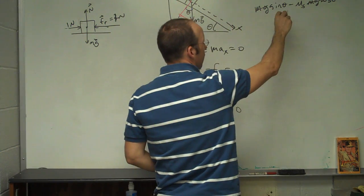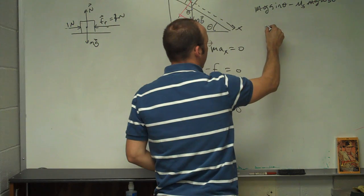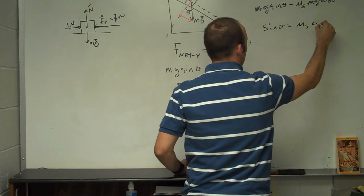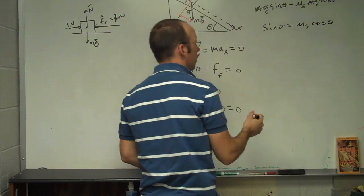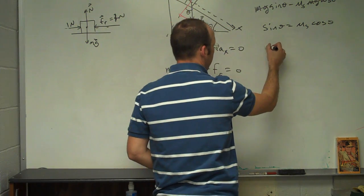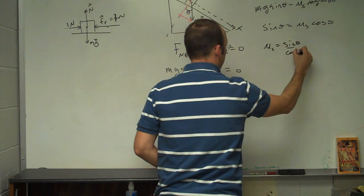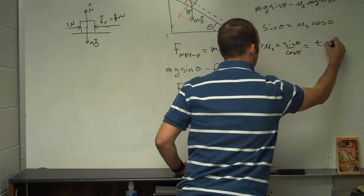And I get that. I can divide both sides by mg and it cancels. And I can add mu_s*cos(theta) to both sides and I get sin(theta) equals mu_s*cos(theta). And then I divide both sides by cos(theta) and I get mu_s equals sin(theta) over cos(theta), which equals tan(theta).